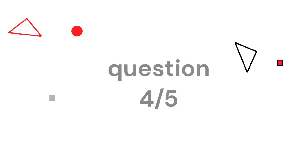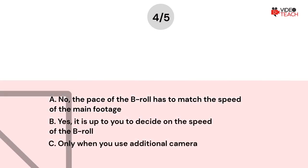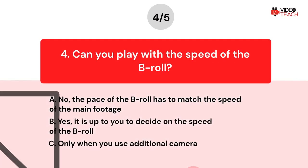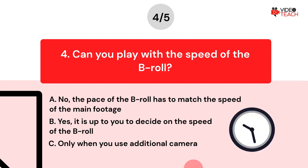Question number four: Can you play with the speed of the B-Roll? Option A: No, the pace of the B-Roll has to match the speed of the main footage. Option B: Yes, it is up to you to decide on the speed of the B-Roll. Option C: Only when you use an additional camera. Now you have about 15 seconds to think about your answer.